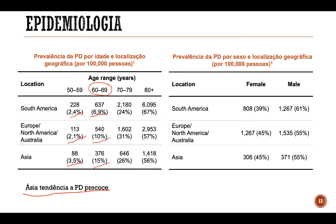Olhando para a tabela do lado direito, que mostra a prevalência da doença de Parkinson de acordo com o sexo, observamos que, independentemente da localização, a doença de Parkinson é mais prevalente entre os homens. Mas essa proporção não é igual em todas as regiões: na América do Sul, 61% dos pacientes são masculinos, enquanto na Europa e na Ásia esse número chega apenas a 55%, indicando que mais mulheres adoecem com a doença de Parkinson na Europa e na Ásia comparado à América do Sul.